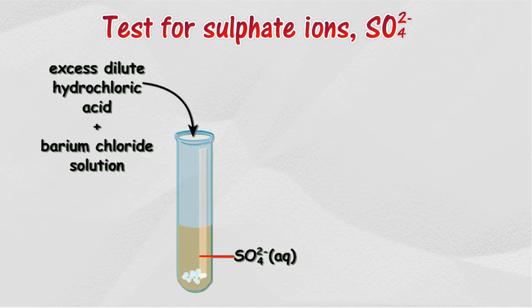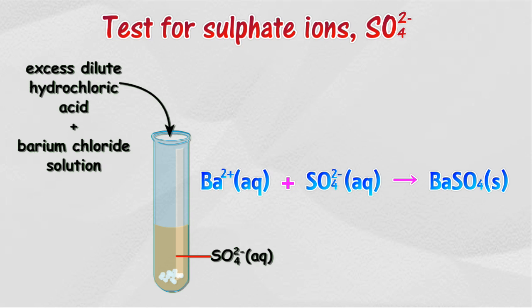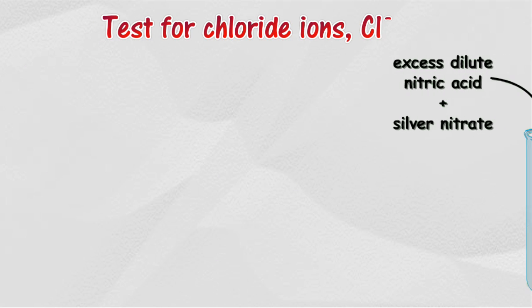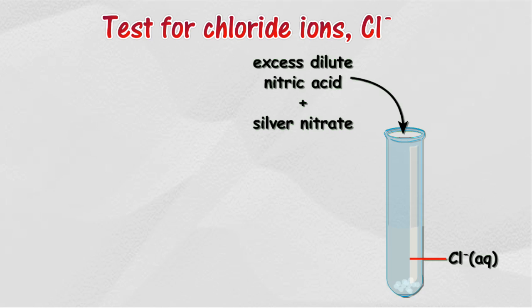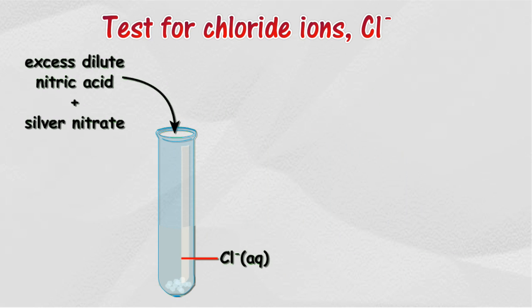Sulfate ion test: about two cubic centimeters of sulfate solution is mixed with dilute hydrochloric acid, followed by barium chloride solution. A white precipitate of barium sulfate forms, confirming the presence of sulfate ions.